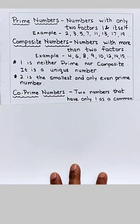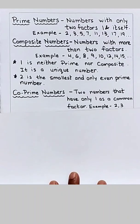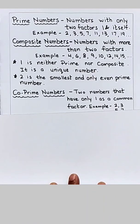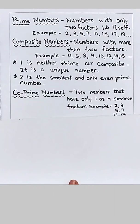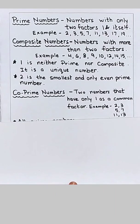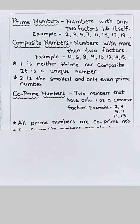Co-prime numbers are two numbers that have only one as a common factor. For example 2 and 3 are co-prime numbers, 5 and 7, 11 and 13 are co-prime numbers. All prime numbers are co-prime numbers.